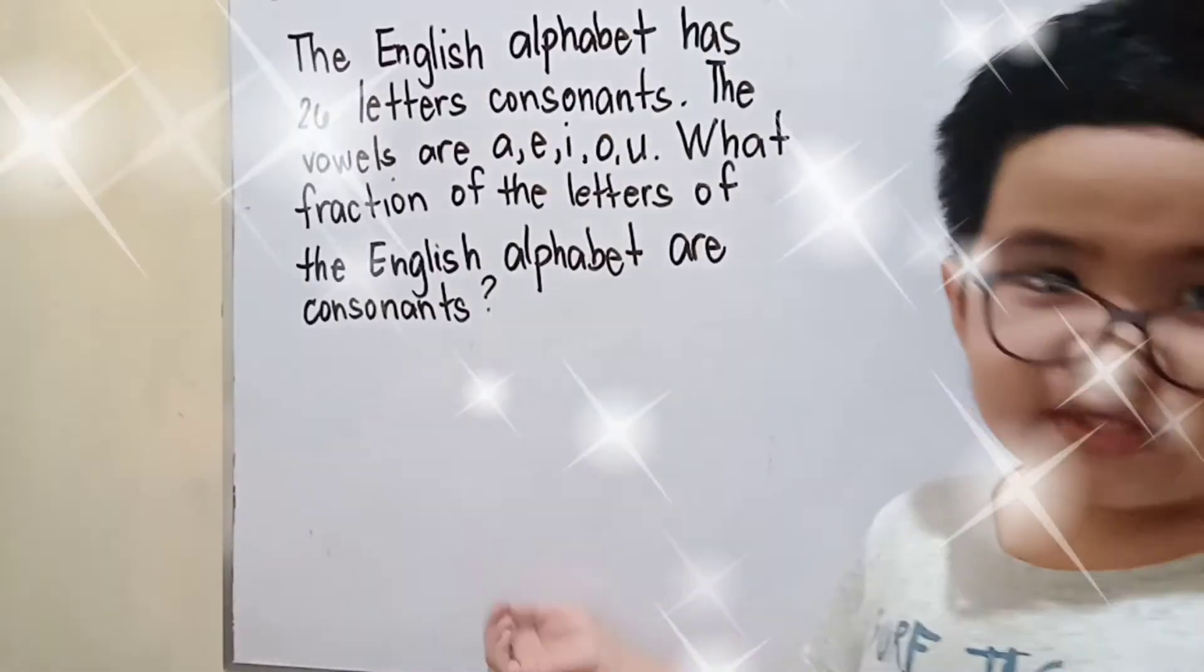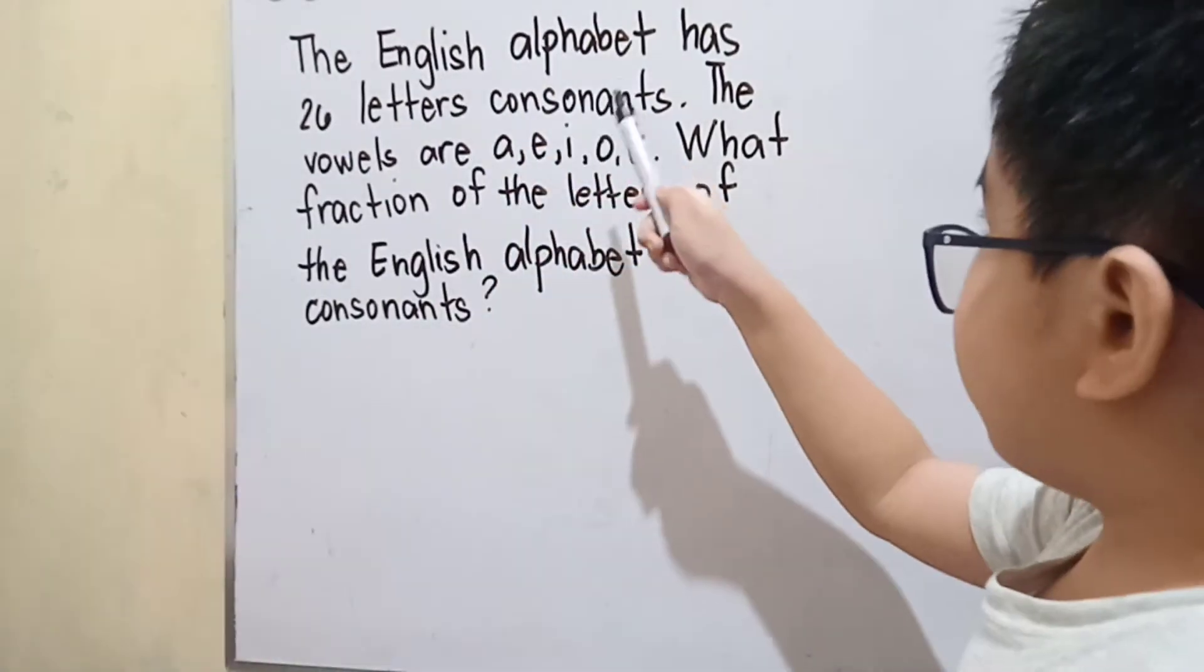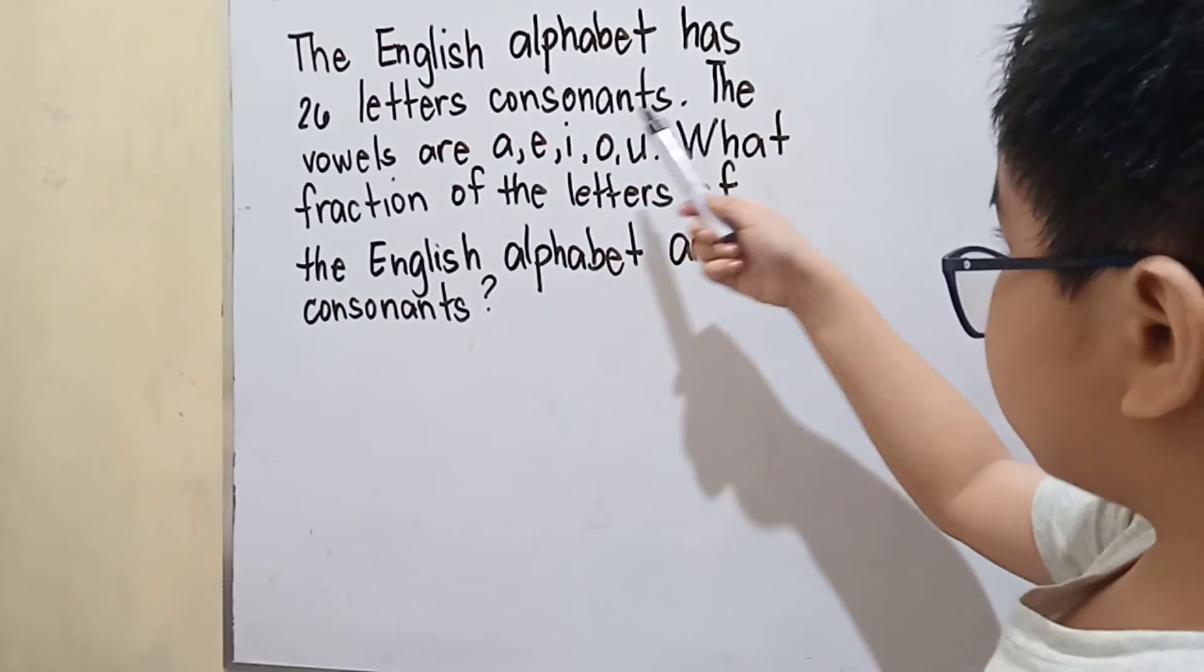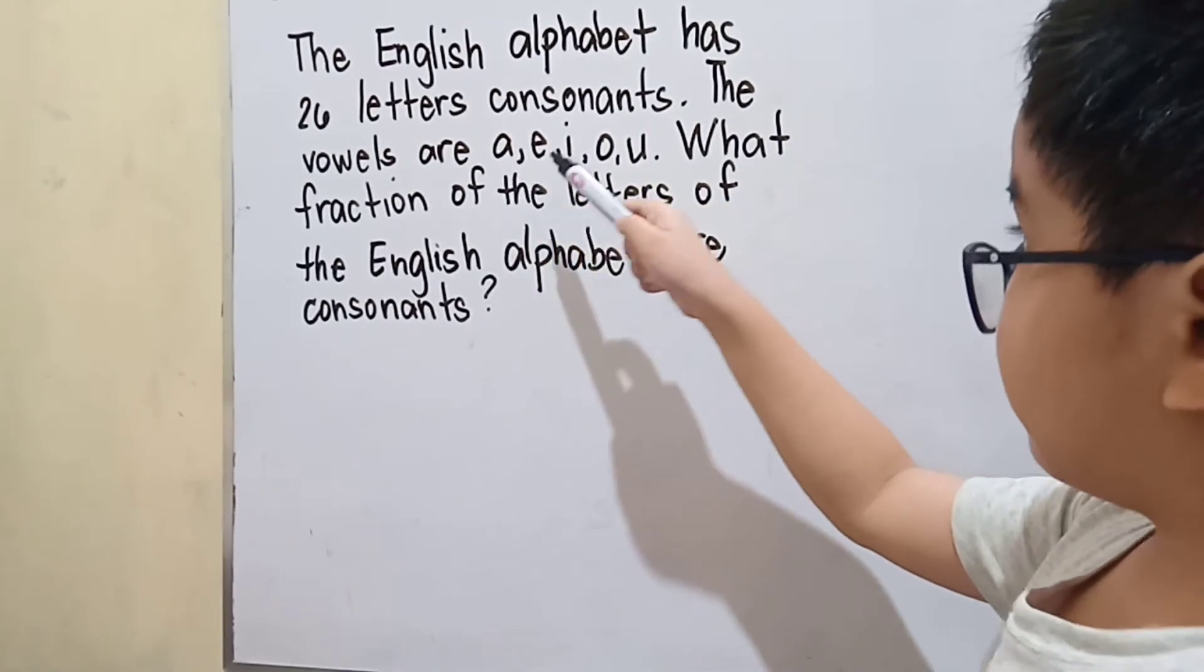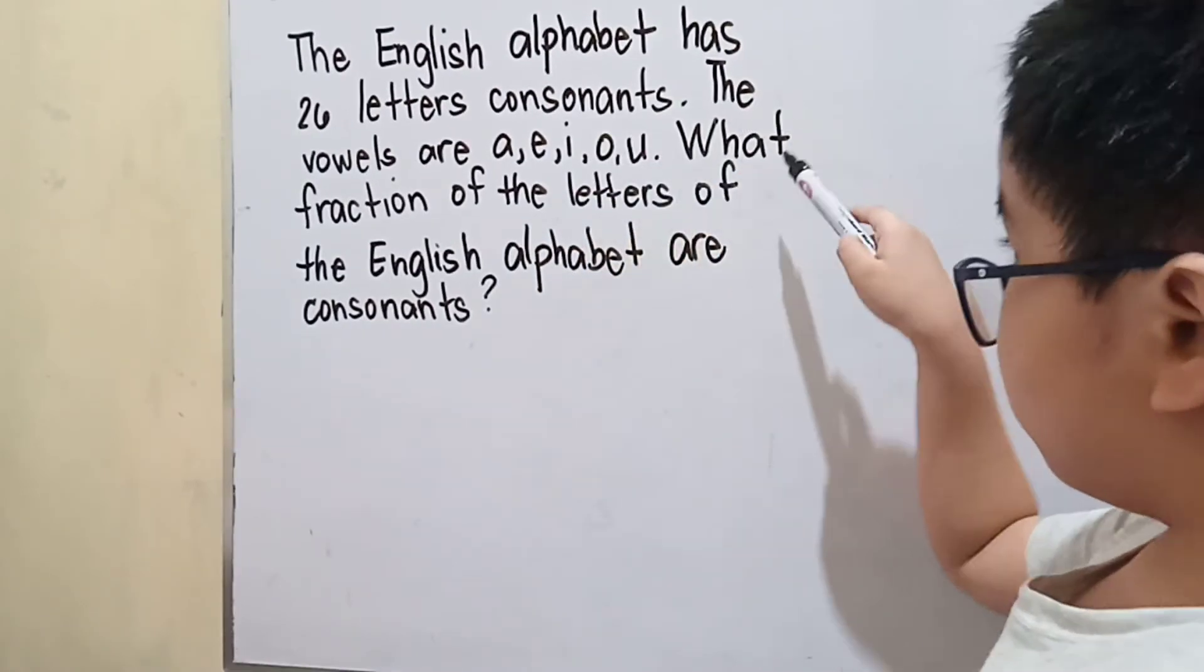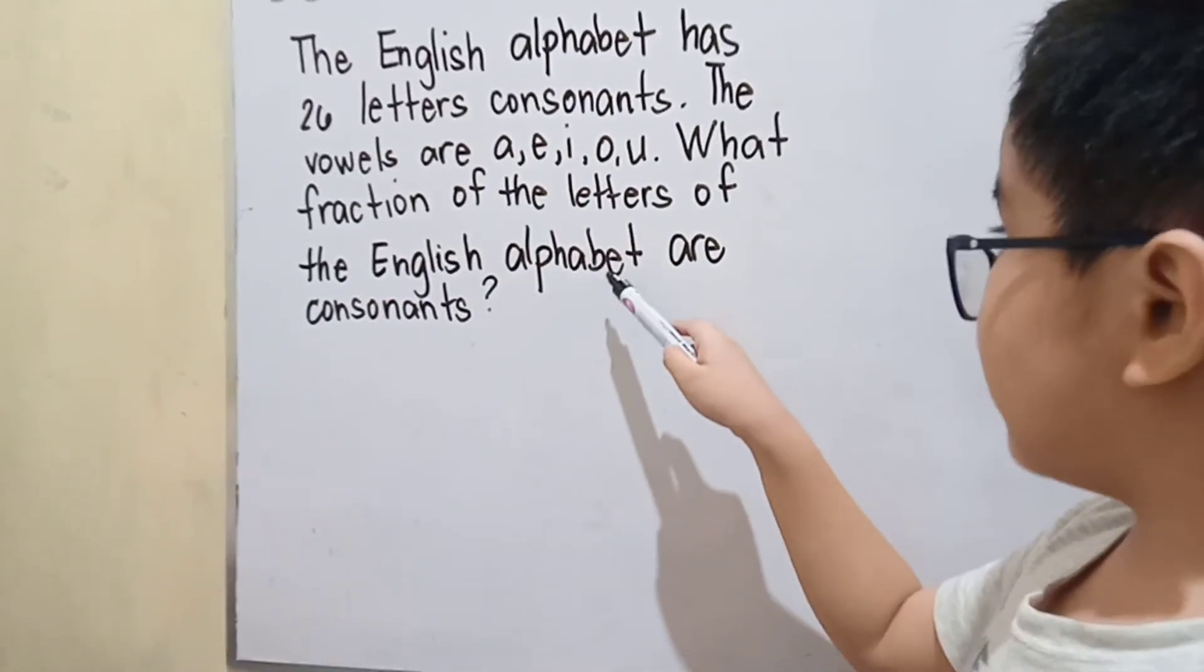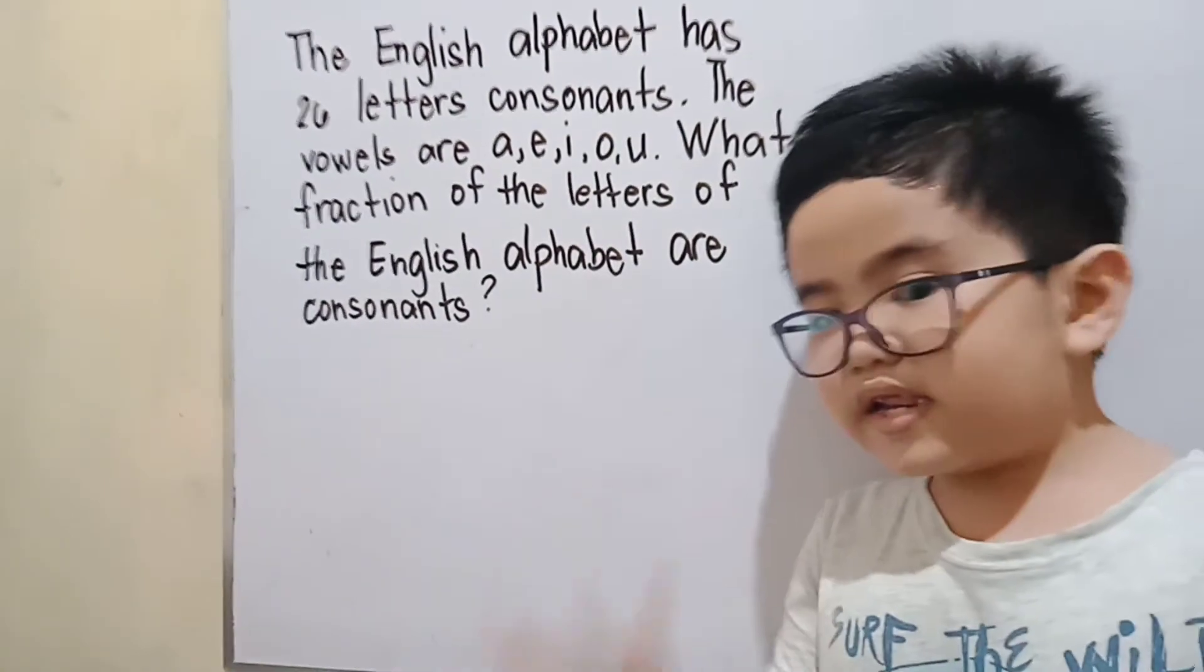Now this is the fourth problem. The English alphabet has 26 letters consonants. The vowels are A, E, I, O, U. What fraction of the letters of the English alphabet are consonants? Come on, let's solve it.